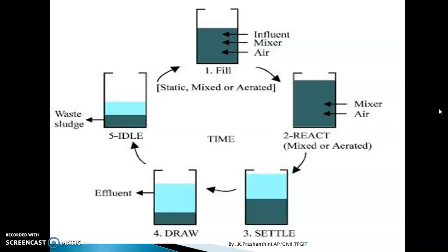In the fourth stage, called the draw or decant stage, the treated effluent is decanted or removed from the SBR. The fifth and final stage is the idle stage, where excess activated sludge is removed as waste sludge. The activated sludge necessary for further reactions remains in the tank. The reactor then receives fresh sewage again, and the entire five-stage process repeats cyclically.